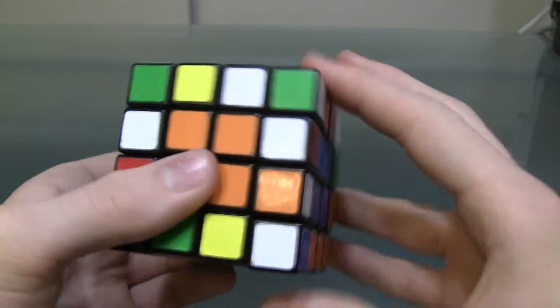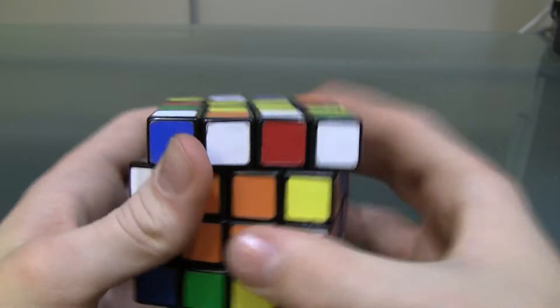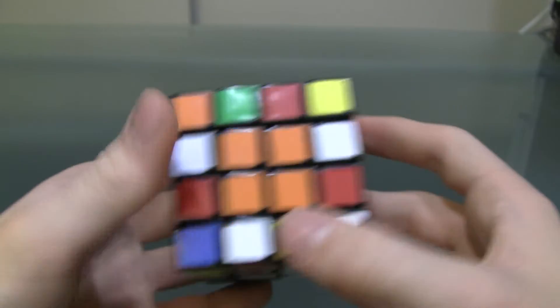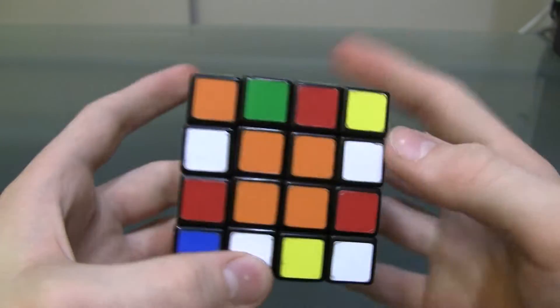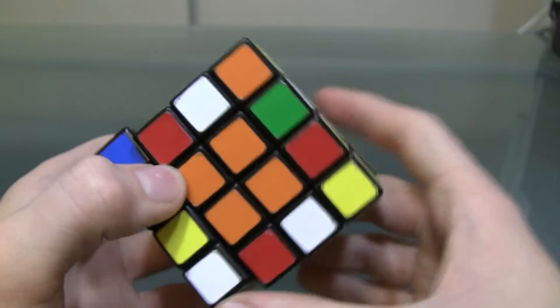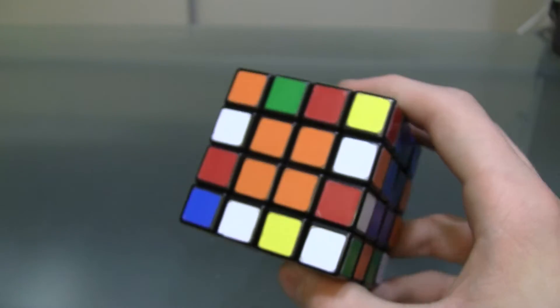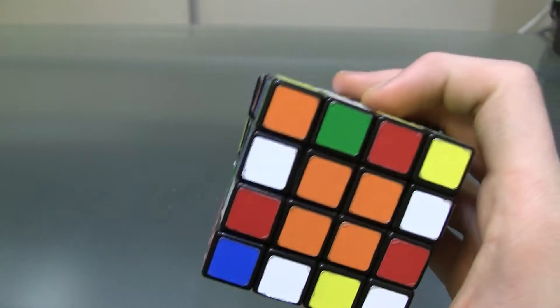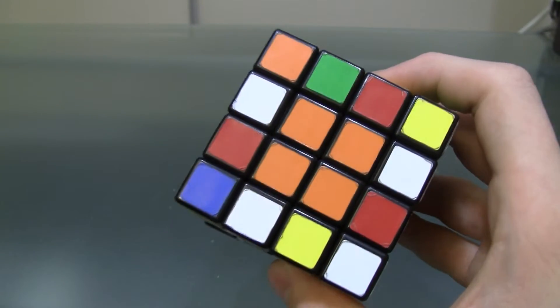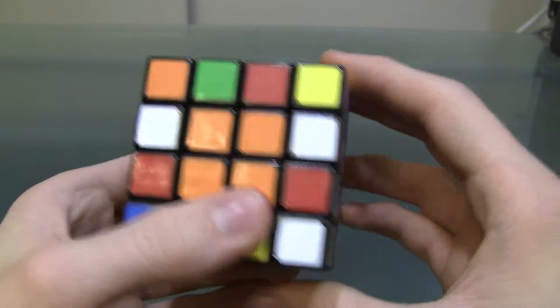But, you'll notice that how they were before, when they both had the same color on top, I could not connect them, because they're in the same layer. So, if you're having the problem where they're in the same orientation, like this, so they have the same color facing you, it's really easy to switch their orientations.